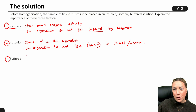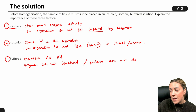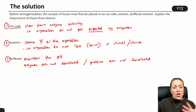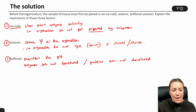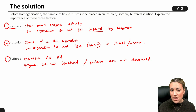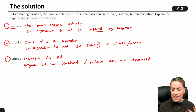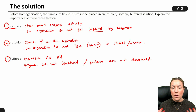We also want the solution to be buffered, which means we want to maintain the pH of the solution. This is so enzymes are not denatured — or you could say proteins are not denatured. You might think that's a contradiction because we said ice cold to slow enzyme activity, but we don't want to denature the enzymes because we might want to study the function of these organelles and their enzymes later once we've separated them. We just want to slow down their activity. Equally, we don't want to denature any other proteins found within these organelles.